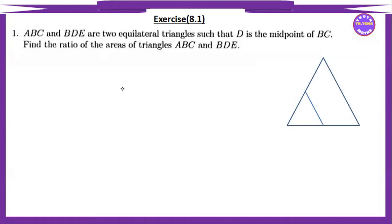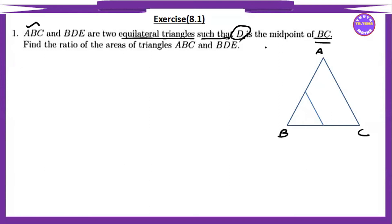Now we can do Exercise 8.1. ABC and BDE are two equilateral triangles. We can work with triangle ABC and triangle BDE such that D is the midpoint of BC.